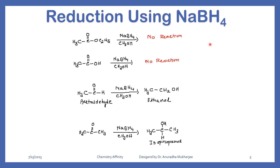Sodium borohydride is a very mild reducing agent — milder than DIBAL. When we use ethyl acetate or acetic acid, sodium borohydride cannot reduce them. However, acetaldehyde gives ethanol — a primary alcohol — and acetone gives isopropanol, a secondary alcohol.